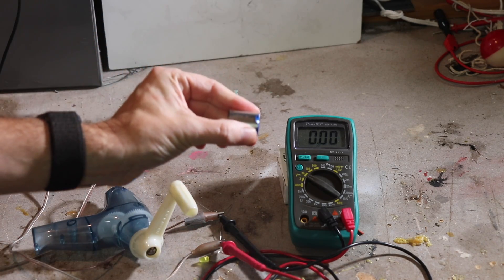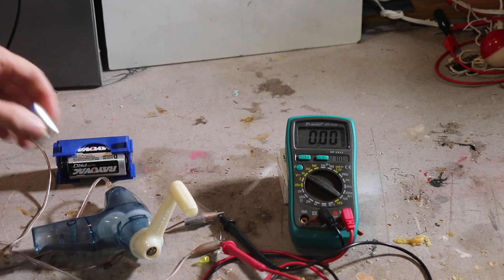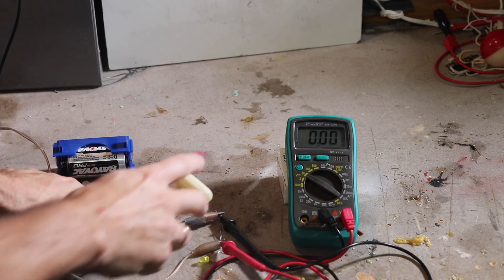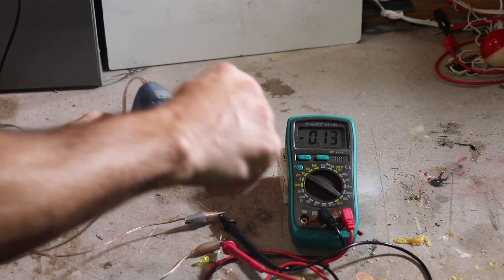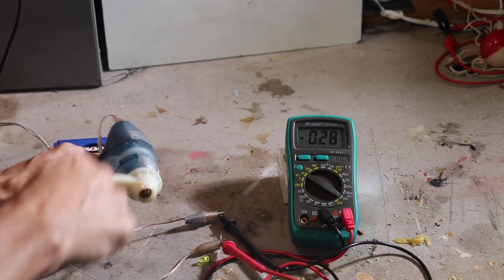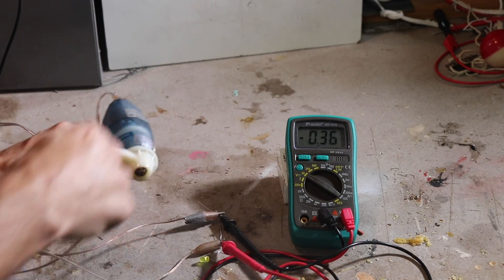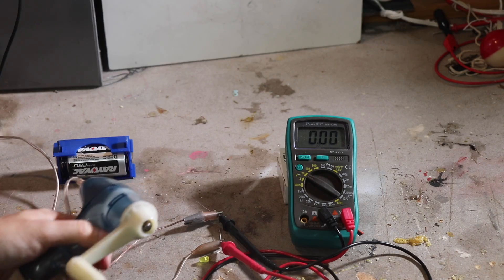So I'm taking a magnet like this and I'm rotating it around. So I'm changing the magnetic field through a coil of wire and that generates a current. So if I just crank this, I can get up to... I'm at 0.3 volts.